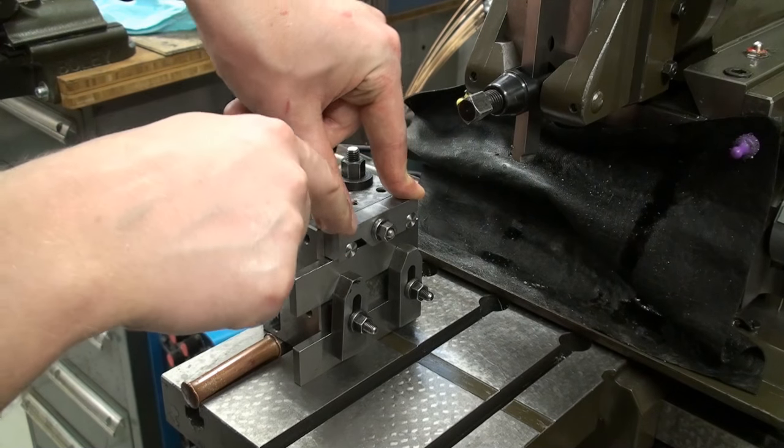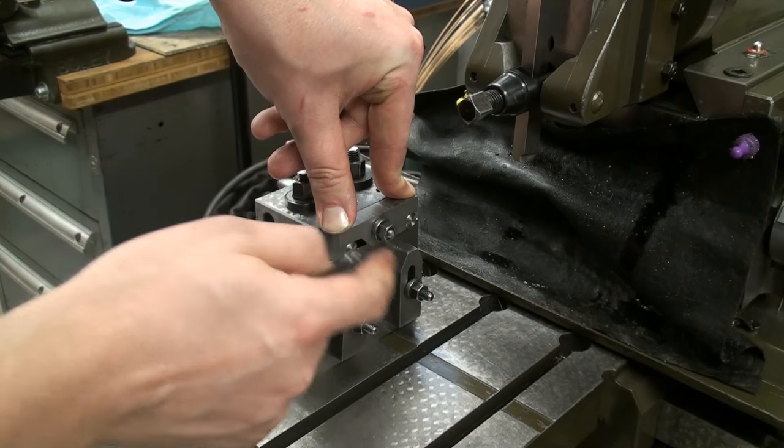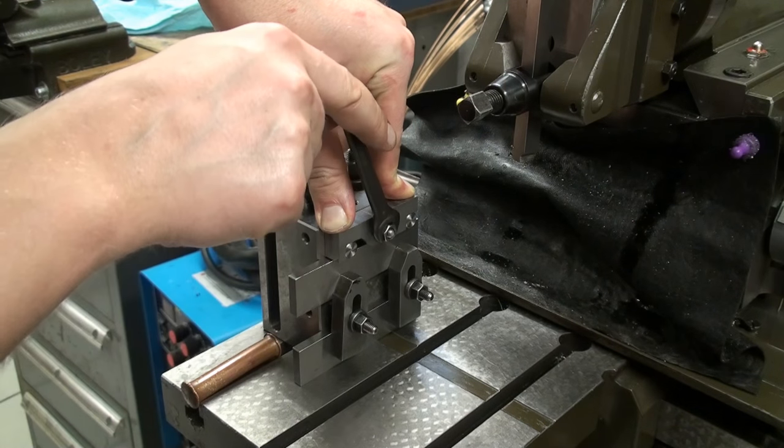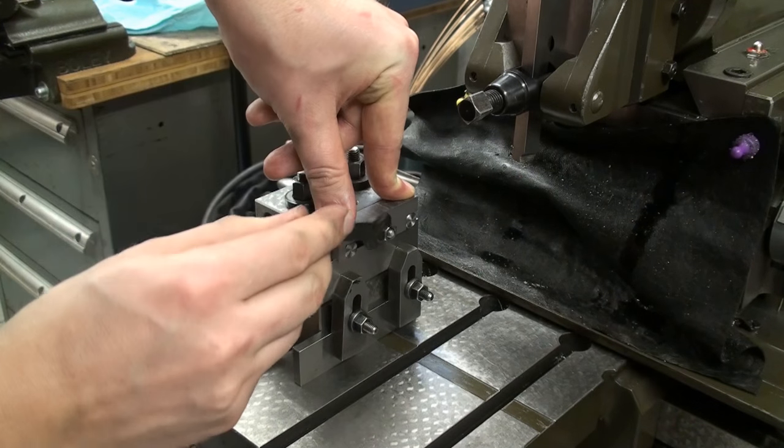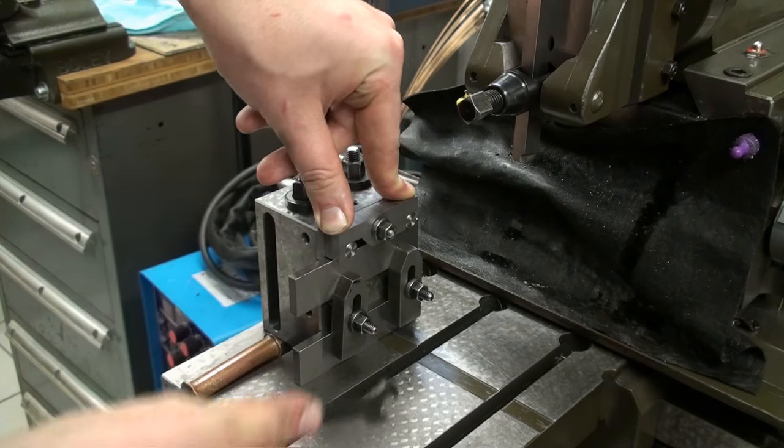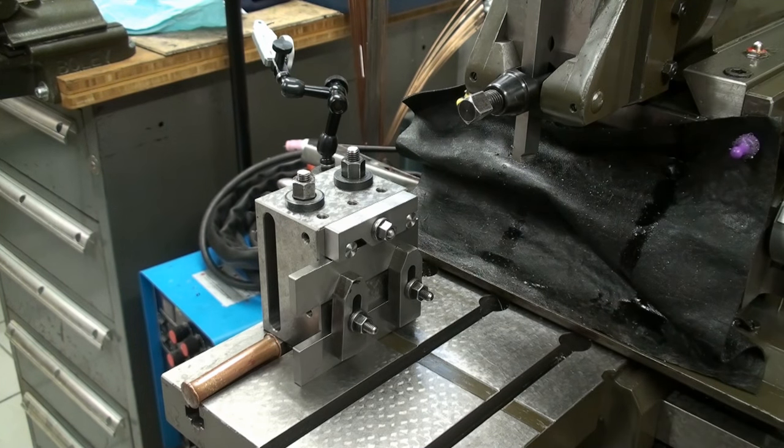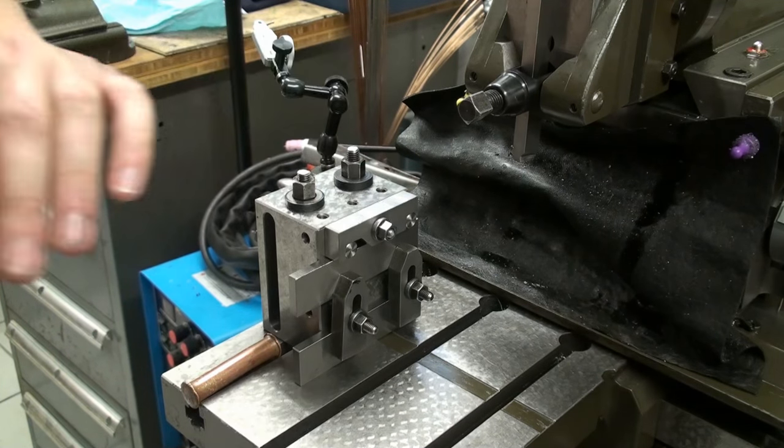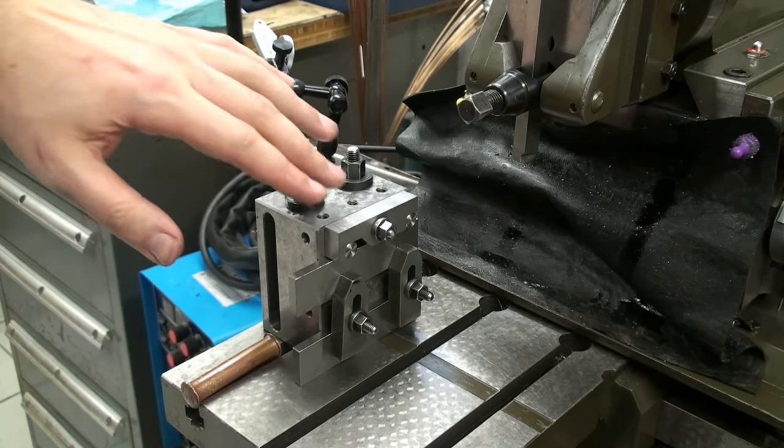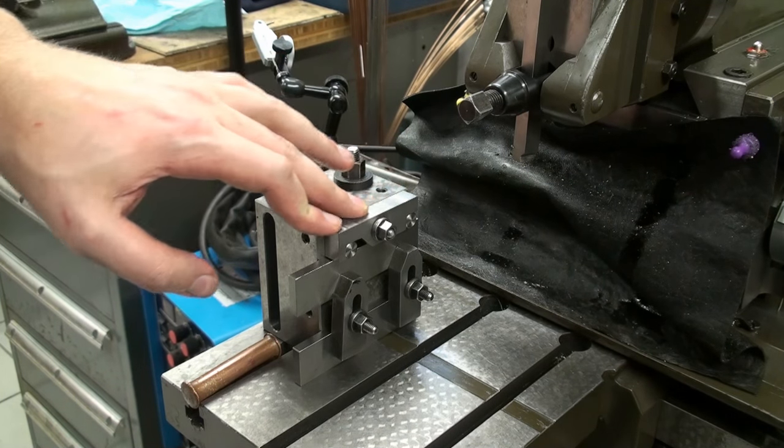I make sure that I keep pressure from my two fingers on top of the sine bar when I clamp it. It shouldn't need a whole lot of tension because we're only taking off maybe two or three hundredths of a millimeter. We're taking a very light pass just to clean up the top surface.